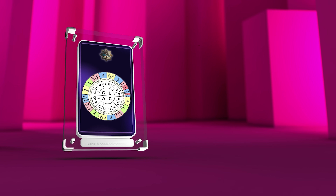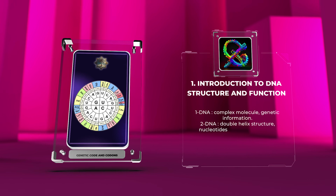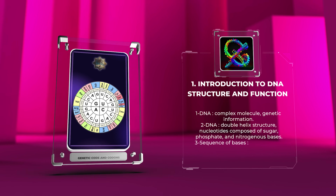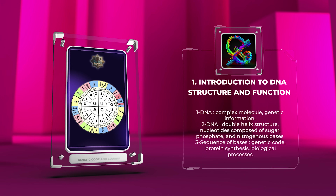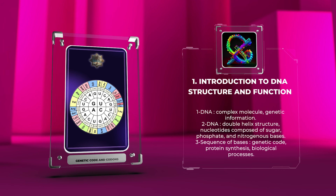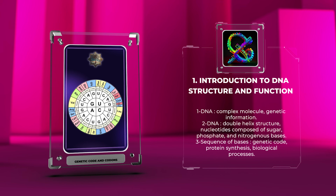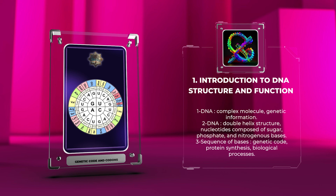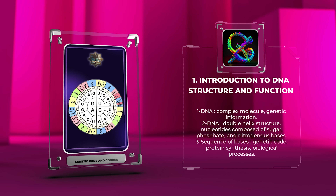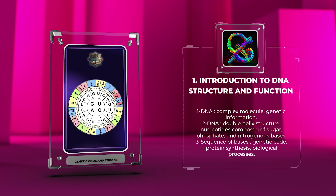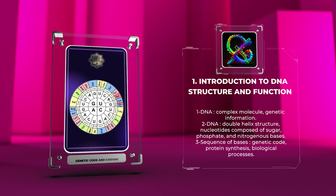DNA is a complex molecule carrying genetic information. It has a double helix structure with nucleotides composed of sugar, phosphate, and nitrogenous bases. The sequence of bases determines the genetic code, instructing protein synthesis and other crucial biological processes.